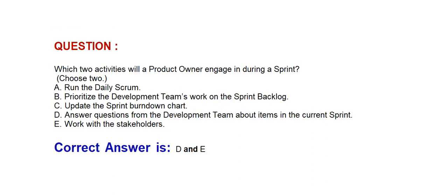Next question: Which two activities will the product owner be engaged in during a sprint? Choose two options. Option A: Run the daily scrum. Option B: Prioritize the development team's work on the sprint backlog. Option C: Update the sprint burn down chart. Option D: Answer questions from the development team about items in the current sprint. Option E: Work with the stakeholders. Correct answer is Option D and Option E: Answer questions from the development team about items in the current sprint, and work with the stakeholders.